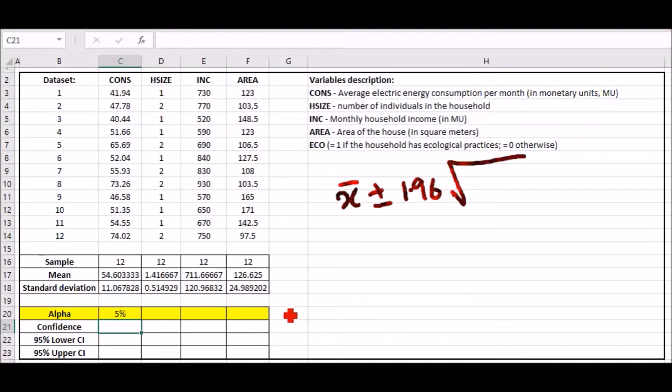Then it's times the standard error, or in this case because we've got standard deviation, times the standard deviation over the square root of the sample size. All of this part is going to be the confidence value.